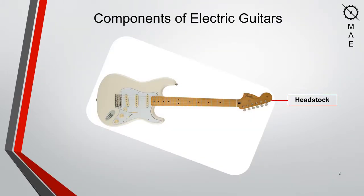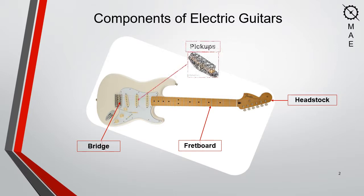The headstock is where the strings are fastened and where tension is varied. The fretboard varies the distance between nodes, allowing variations in pitch. The bridge is also where the strings are fastened and can be thought of as a time-invariant node.